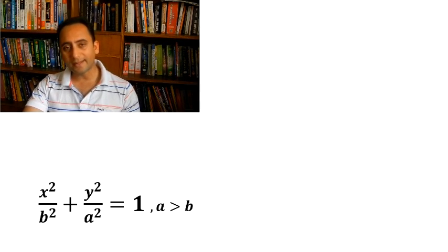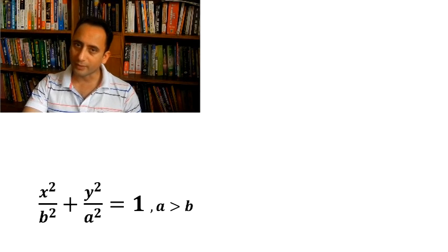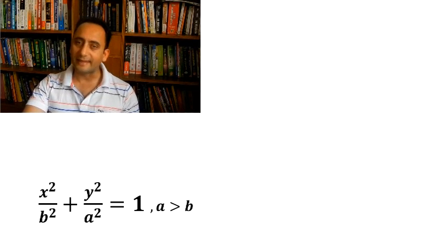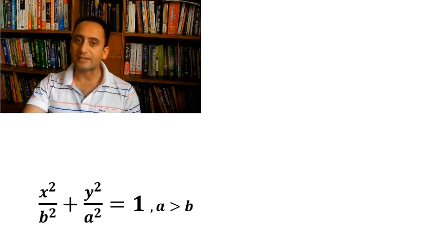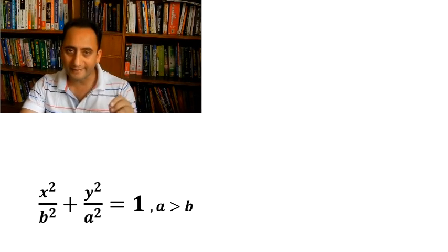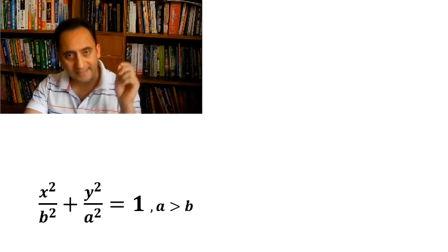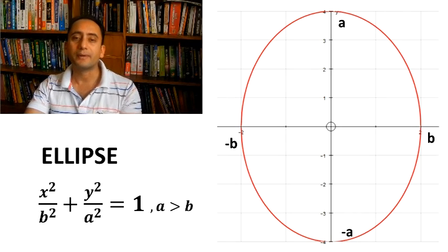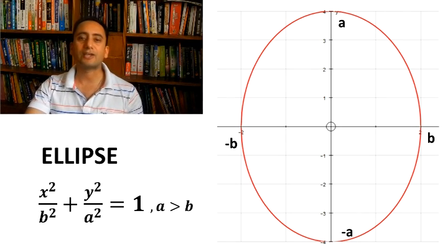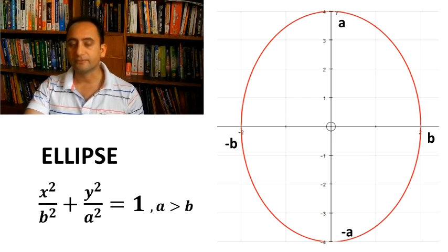Next one is x²/b² + y²/a² = 1, again where a is greater than b. In this case, if the denominator of y² becomes greater than that of x², this equation represents an ellipse but this time the major axis lies on the y-axis, not on the x-axis. And here is the curve.